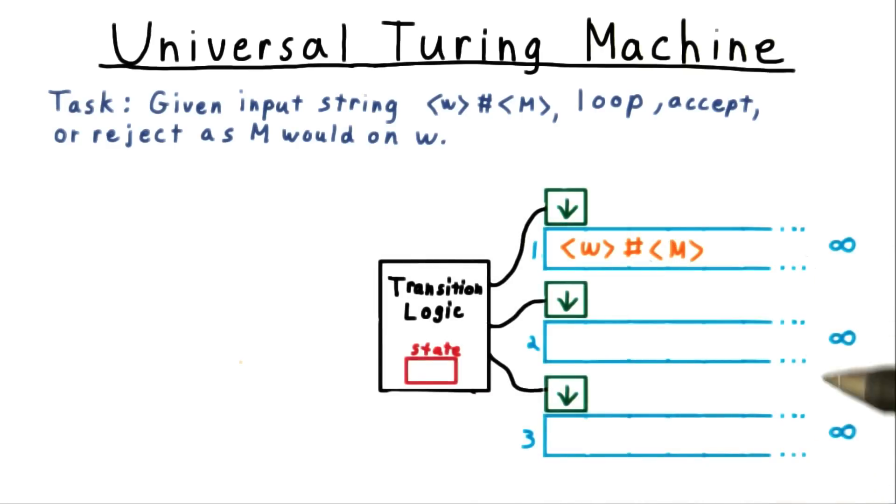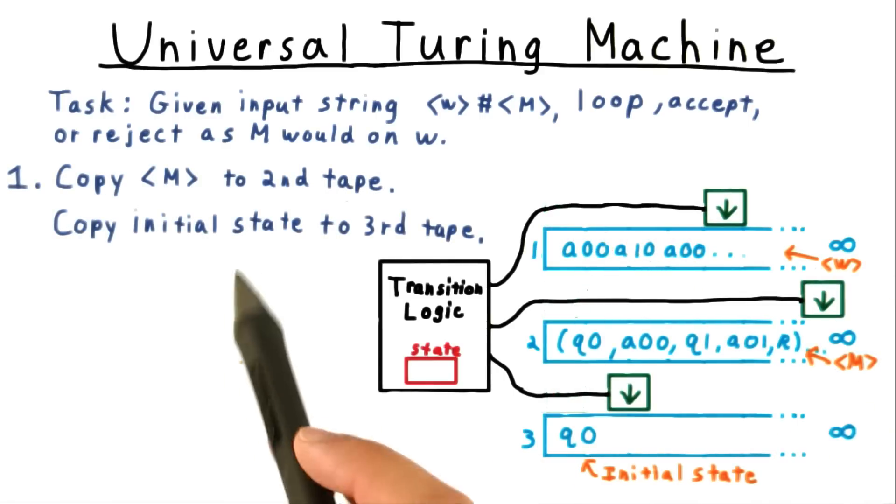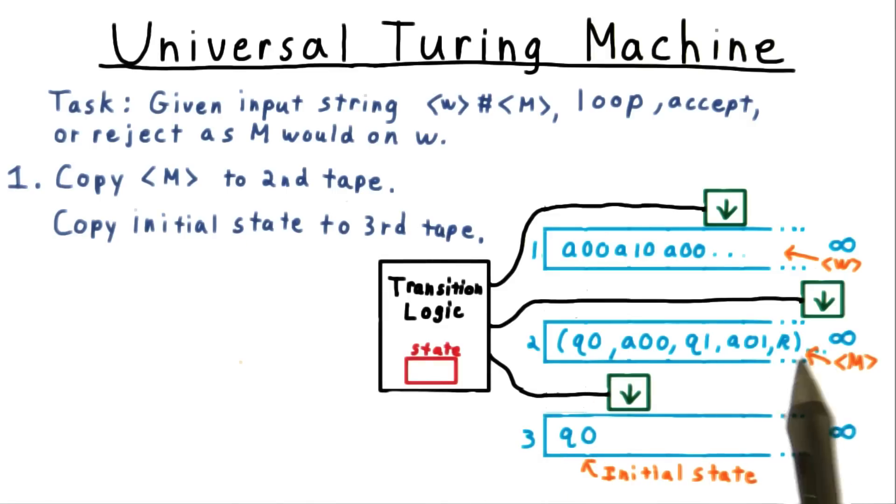We'll describe a three-tape Turing machine that achieves this goal of simulating M on w. The input comes in on the first tape, and here I've just written out the mathematical description. First, we'll copy this description to the second tape and put the initial state on the third tape. For example, the tape contents might end up like this.